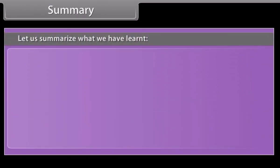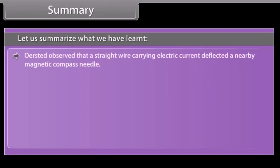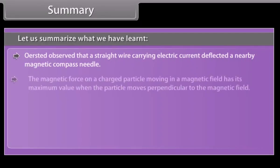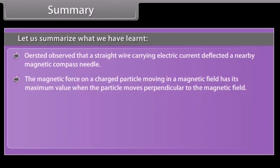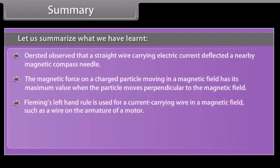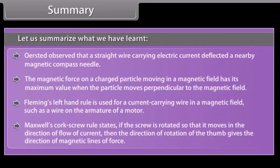Summary: Oersted observed that a straight wire carrying electric current deflected a nearby magnetic compass needle. The magnetic force on a charged particle has its maximum value when the particle moves perpendicular to the magnetic field. Fleming's left hand rule is used for a current carrying wire in a magnetic field such as a wire on the armature of a motor. Maxwell's corkscrew rule states that if a screw moves in the direction of current flow, the direction of rotation gives the direction of magnetic lines of force.